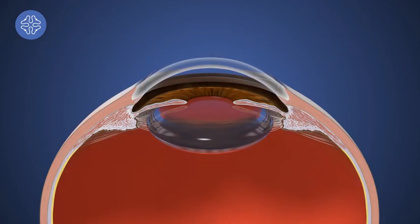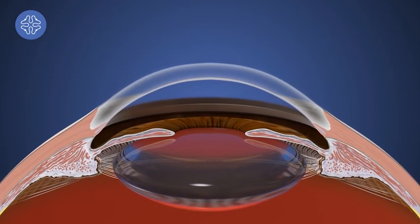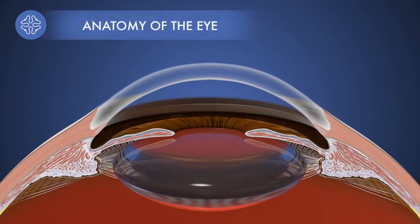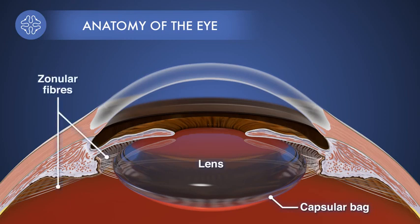Accommodation is the ability of the natural lens of the eye to change focus from far to near. The lens is contained inside a capsular bag, which is attached by zonular fibres to the ciliary body.